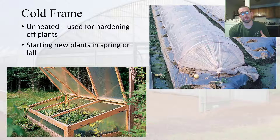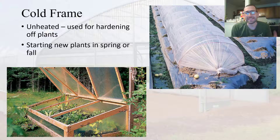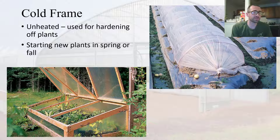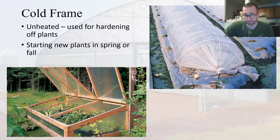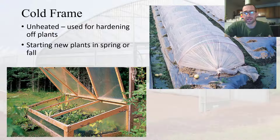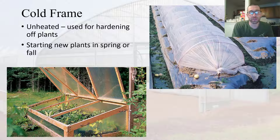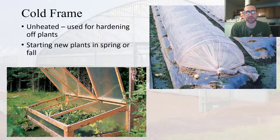The cold frame is essentially almost the same thing, very similar, except that it is unheated — it's like a hot frame but there's no bottom heating element. A cold frame can be utilized for hardening off plants, or it could be used for starting new plants in the spring or the fall. The benefit of the cold frame is that light passes through, heats up the contents within, and that warmer air can't escape — similar to a greenhouse. This is really important for nighttime temperatures, especially early or later in the year when plants are at risk for frost damage.